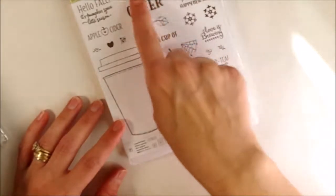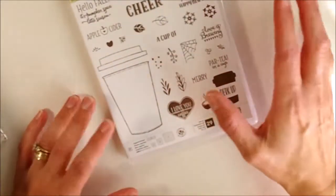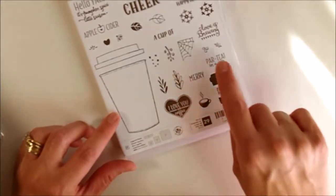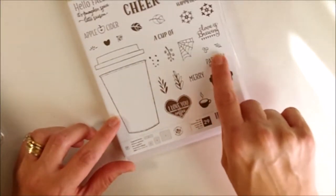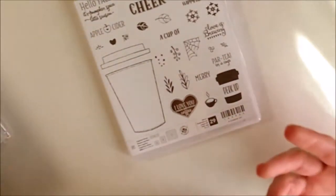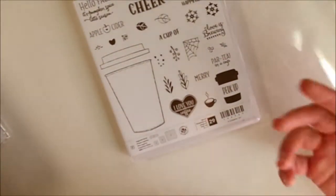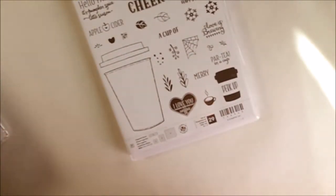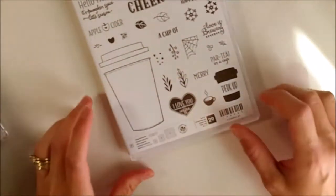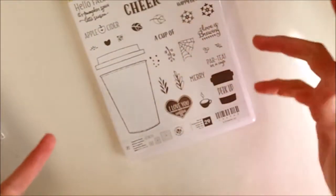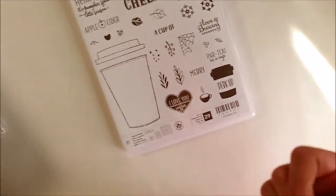But I like that this has the leaves, the tea cup, and some tea stuff and apple cider things to go along with coffee, because I love both. I drink tea all the time and have coffee now and then. These even look like little snowflakes. This stamp set doesn't have dies or anything.